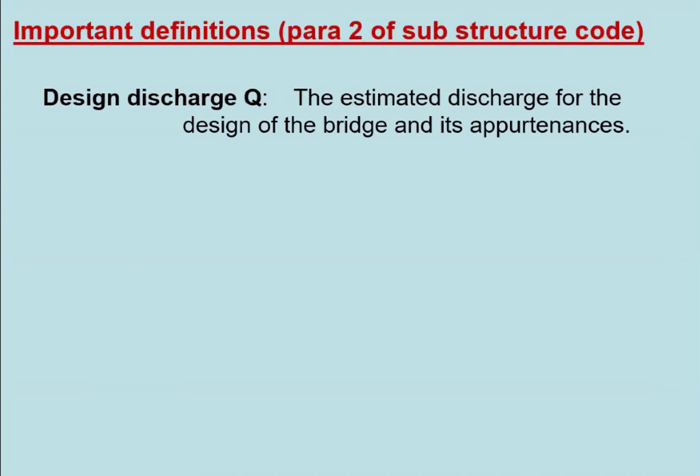We will go through some important terms required in this presentation. One is design discharge — it is the estimated discharge we are estimating for the purpose of designing a bridge or any appurtenance. It may be for deciding the span, the guide bank, or other things. The discharge we are using for designing these things is called the design discharge.